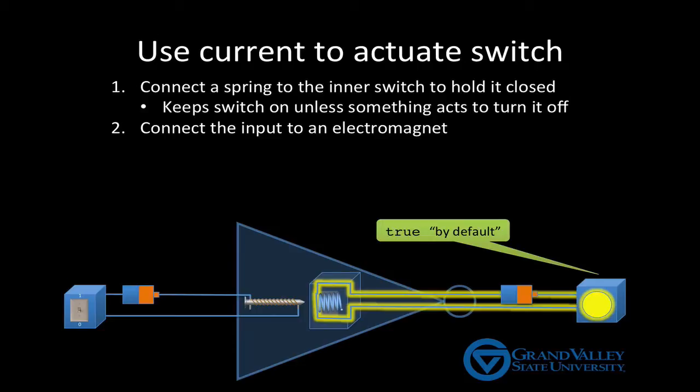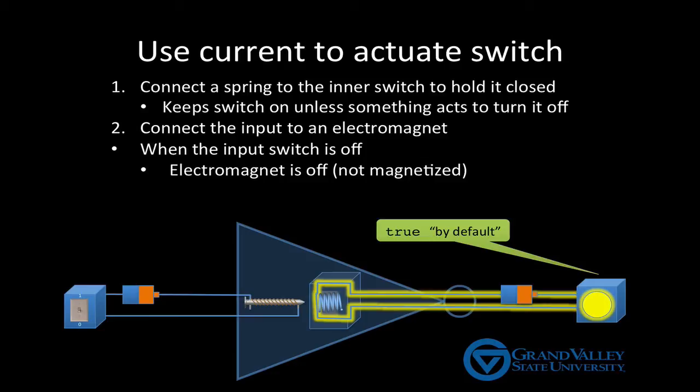Next, we're going to connect the input to an electromagnet. When the input switch is OFF, it means the electromagnet is also OFF, or not magnetized. Therefore, it's not countering the spring, and the output circuit remains closed, and the output remains true.